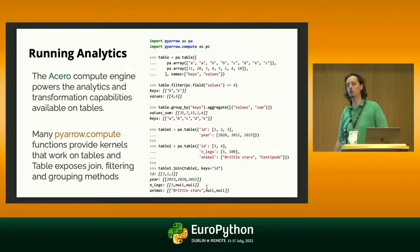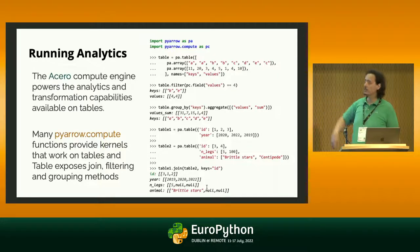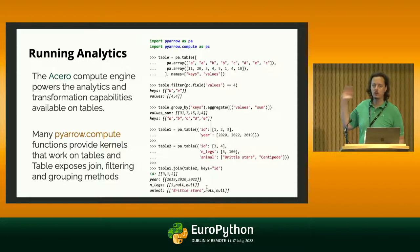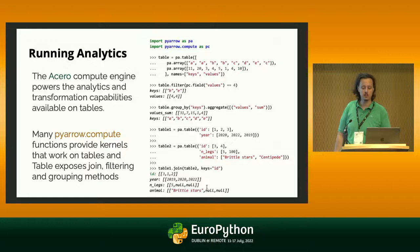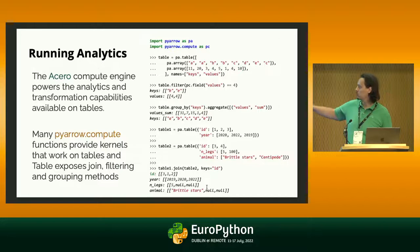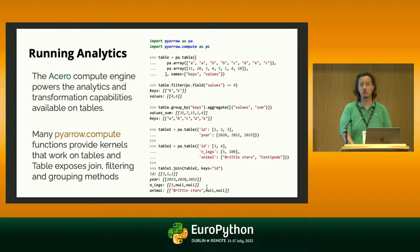Here you can see some simple analytics capabilities from Acero applied to tables. The PyArrow compute module gives you access to the Acero compute engine. You might have a table where you want to filter data — looking up values equal to something — or you could create a filter of any complexity, perform an aggregation to get the sum of all values grouped by keys, or pick two tables and join them with a left join to get back a new table.